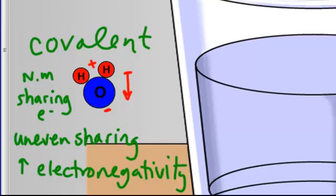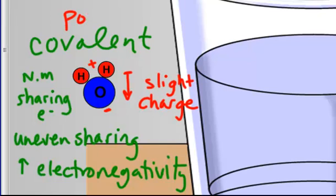So you get an uneven pulling, which is going to result with a slight charge. And we're going to change the name of our bond now. It's not just a covalent bond, but it's called a polar covalent bond. Polar meaning slight charge, uneven pulling.